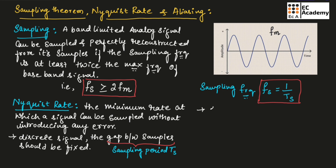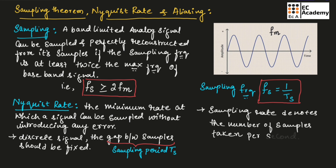The sampling rate denotes the number of samples taken per second. To convert an analog signal into a discrete signal, the gap between samples should be fixed. The gap between samples is known as the sampling period, and from this sampling period we can obtain the sampling frequency by taking the inverse of the sampling period.